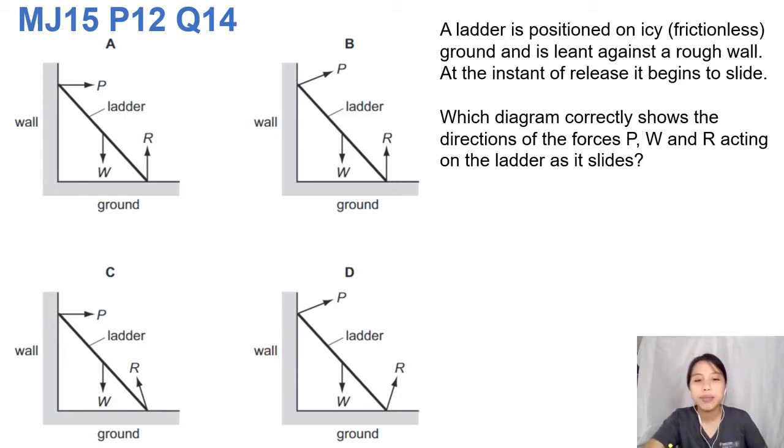Let's look at the question carefully and break it down. A ladder is positioned on an icy frictionless ground, so ground does not have friction. And is leaned against a rough wall. Rough wall means got friction on the wall. At the instant of release, it begins to slide.